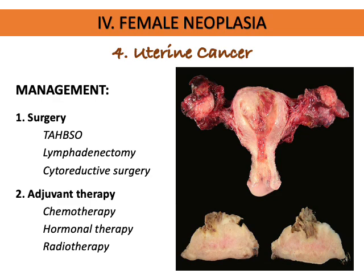Radiotherapy options include vaginal brachytherapy, which is invasive — a radioactive substance is implanted so the woman is radioactive and must be confined to the hospital. External beam radiotherapy is outpatient — a machine directs radiation toward the cancer cells. Radiotherapy for uterine cancer is effective only for stage one and stage two.